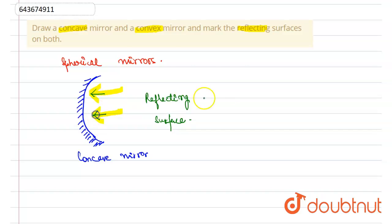And for a convex mirror, when it bulges out, if we polish this side, then this is the polished side.